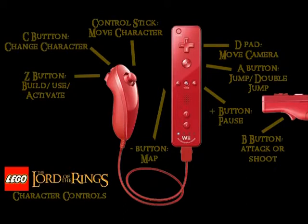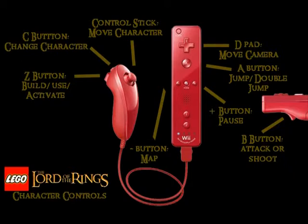If you use the plus button, it's a pause that will show the in-game options that you have in the levels and then out in the Middle Earth giant field area. Out in the Middle Earth field, if you press the minus button, you'll get a map. And that's about all the controls for this game. Just click on the bottom of the screen to go back to the prologue. I'll see you guys there.